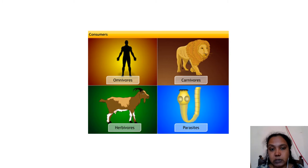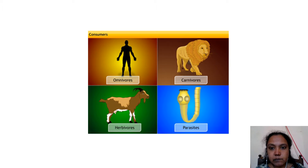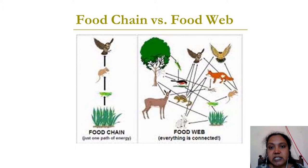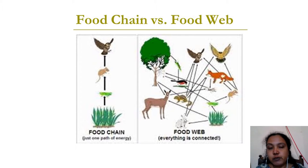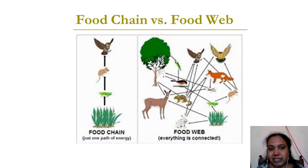Parasites make use of a living host for their survival. Like for example, the lice on our head or the fleas on the fur of your cats and dogs — they are all called parasites. Understanding the different classes of organisms present in an ecosystem and how they depend on each other, we have to know two terms: the food chain and the food web. A food chain describes a direct and linear relationship — it is a very simple concept to explain how each organism depends on each other.